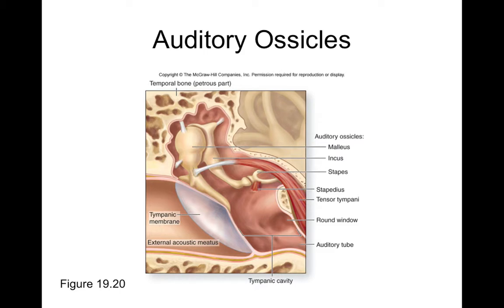We can see the middle ear structures in finer detail here, where we can see the auditory ossicles: the malleus, the incus, and the stapes. Other words for these bones are the mallet, the anvil, and the stirrup, because they kind of look like those structures.